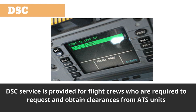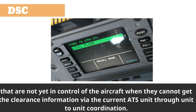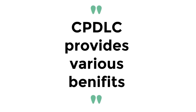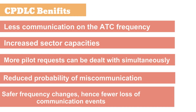Departure clearance service, DCL, provides automated assistance for requesting and delivering departure clearances to aircraft. Downstream clearance service, DSC, is provided for flight crews who are required to request and obtain clearances from ATS units that are not yet in control of the aircraft, when they cannot get the clearance information via the current ATS unit through unit-to-unit coordination.